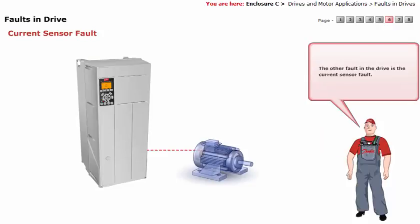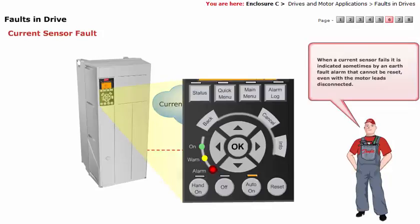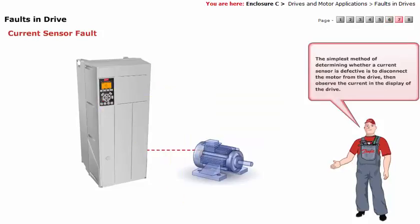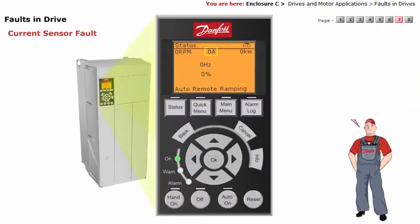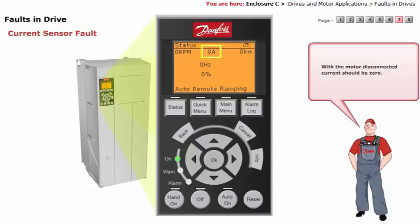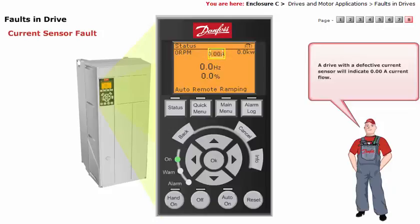The other fault in the drive is the current sensor fault. When a current sensor fails, it is sometimes indicated by an earth fault alarm that cannot be reset, even with the motor leads disconnected. The simplest method of determining whether a current sensor is defective is to disconnect the motor from the drive, then observe the current in the display of the drive. With the motor disconnected, current should be zero. A drive with a defective current sensor will indicate 0.00 amps current flow.